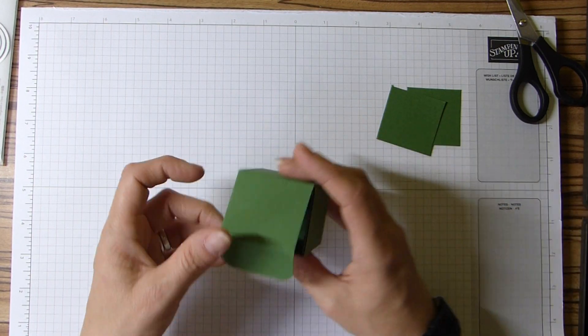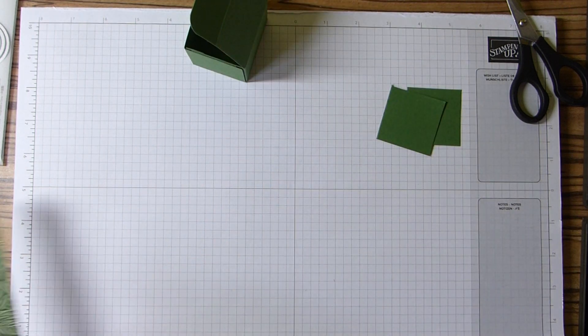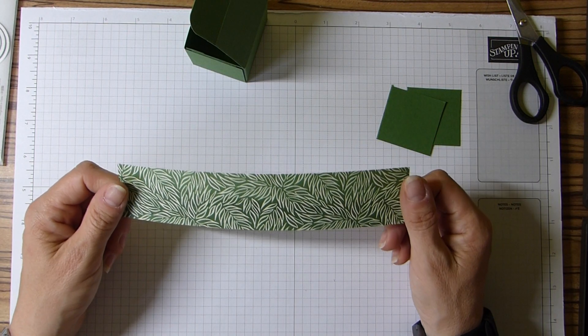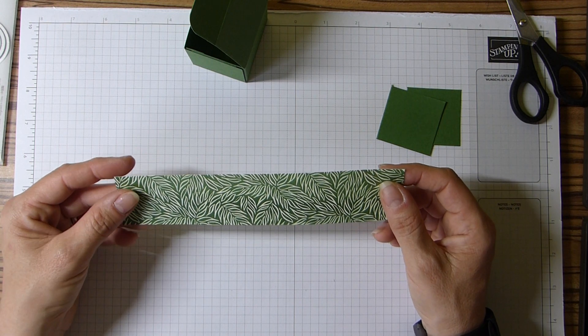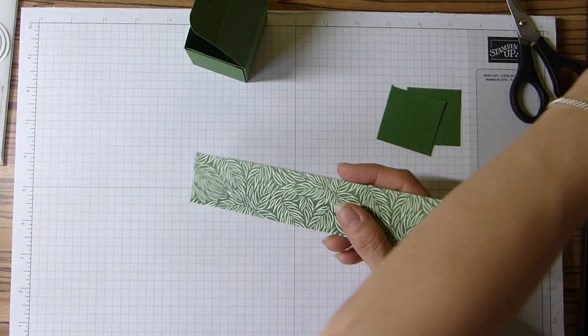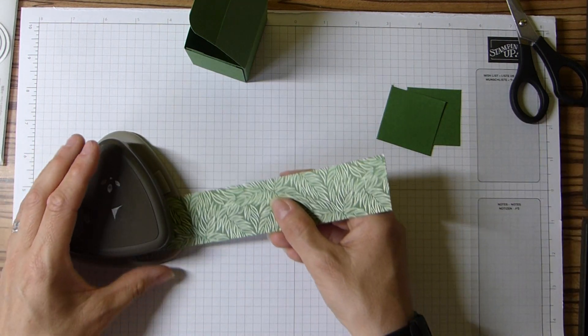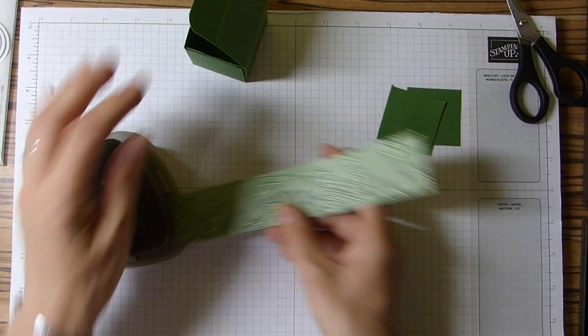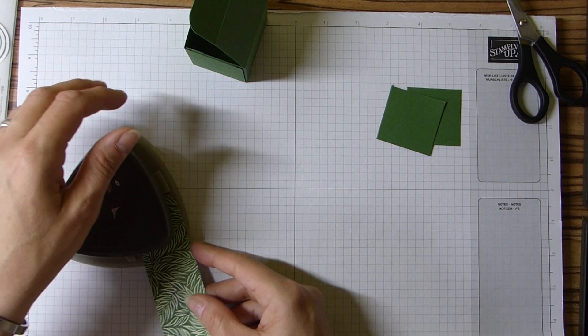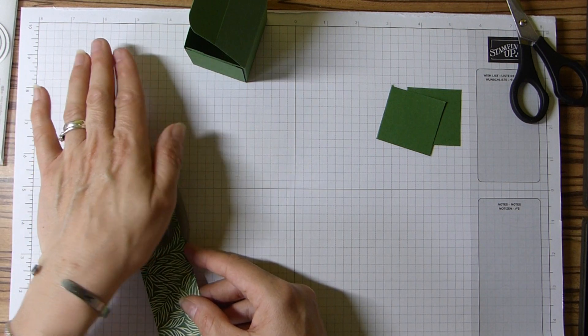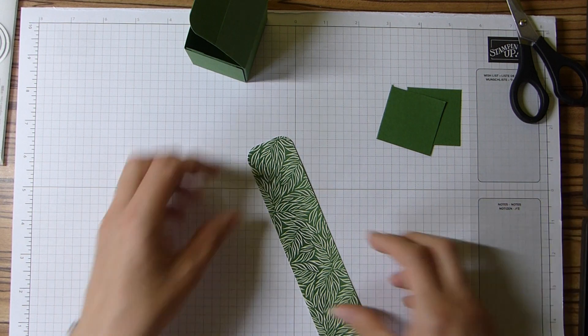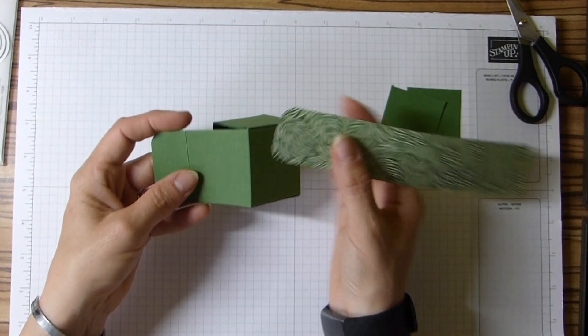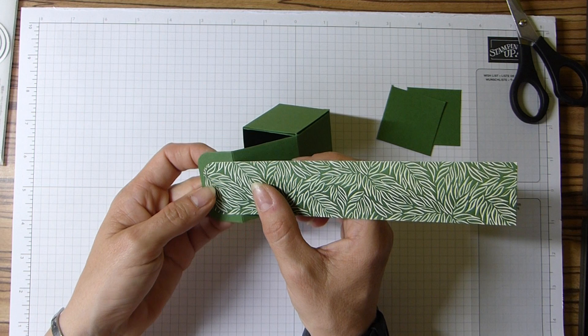So now you need your DSP, and you need a strip that is 1 and 1/2 by 7 and 3/4 inches, which is 4 by 19 and 1/2 centimeters. I'm going to round the corners at one end.